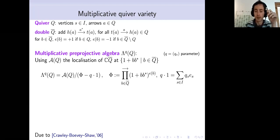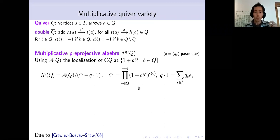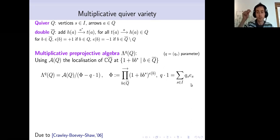This localized algebra contains a distinguished element Φ, which is a product of elements of the form 1 + bb*, with some of these elements possibly inverted depending on the epsilon function. This is a well-defined element in the localized algebra once we fix an ordering for the product. To define the multiplicative preprojective algebra, we set this distinguished element equal to a constant — a decomposition of the identity in terms of a sum of scalars, where e_s denotes the idempotent at vertex s.